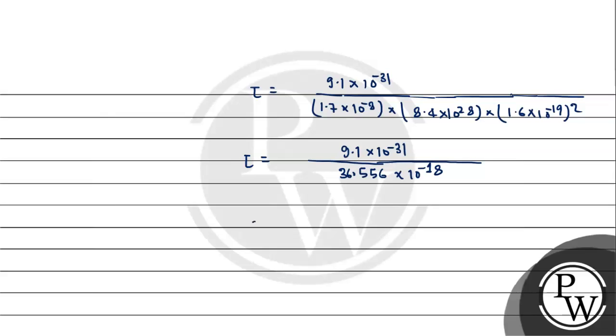Now simplifying this: 9.1 upon 36.556, and 10 to the power - we have plus and minus, so minus 31 plus 18 gives minus 13.